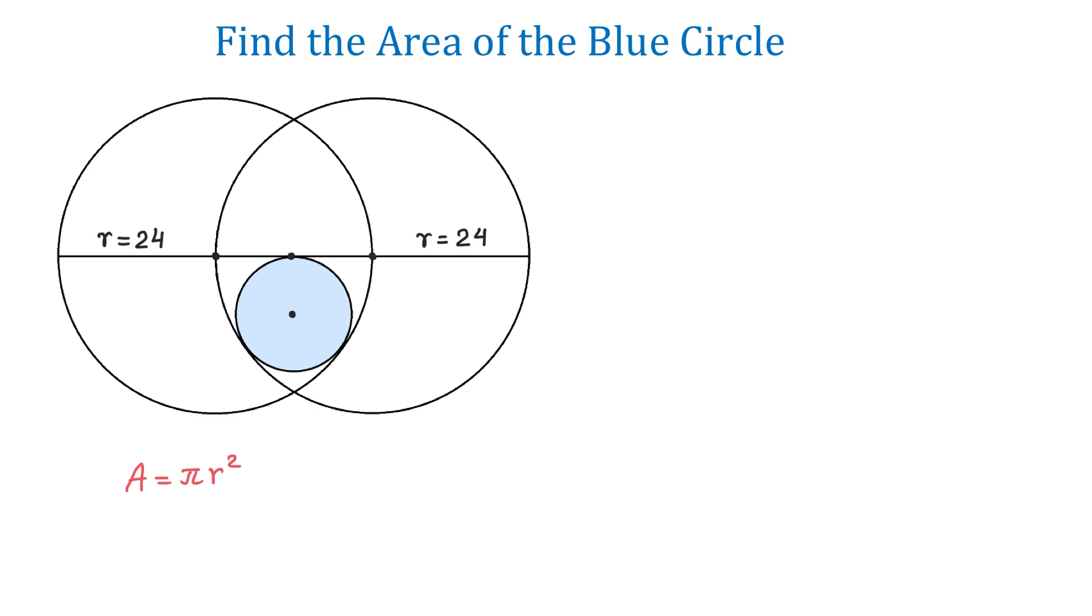The formula for the area of a circle is pi r squared. So, to find the area, first we need to find the radius. So then, how can we find the radius of this circle?